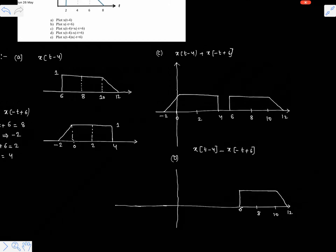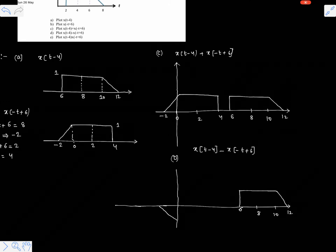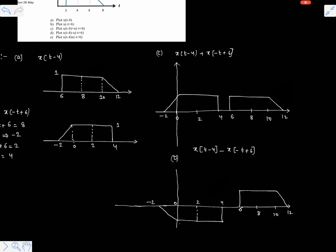But x of minus t plus 6 is inverted, so we simply invert x of minus t plus 6. The time values are minus 2, 0, 2, and 4. This is x of minus t plus 6 — inverted in amplitude.